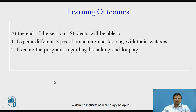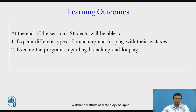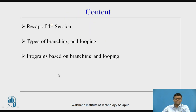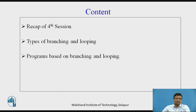The learning outcomes are: at the end of the session, the students will be able to explain the different types of branching and looping with their syntaxes, and they will execute programs regarding branching and looping. In this session, we will first see a short recap of the fourth session, and then the different types of branching and looping, along with programs based on them.